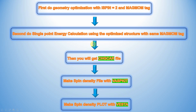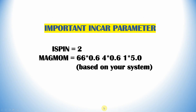Here I will show you the step-by-step approach to do spin density calculation. First, do spin geometry optimization with ISPIN=2 and the MAGMOM tag. Second, do single point energy calculation using the optimized structure with the same MAGMOM tag. Then you will get the CHGCAR file. From the CHGCAR file, make a spin density file with VASPKIT, then make the spin density plot with VESTA.